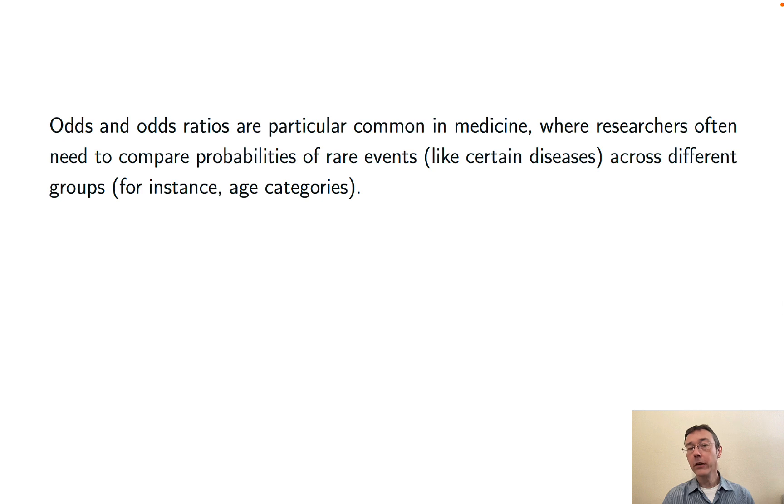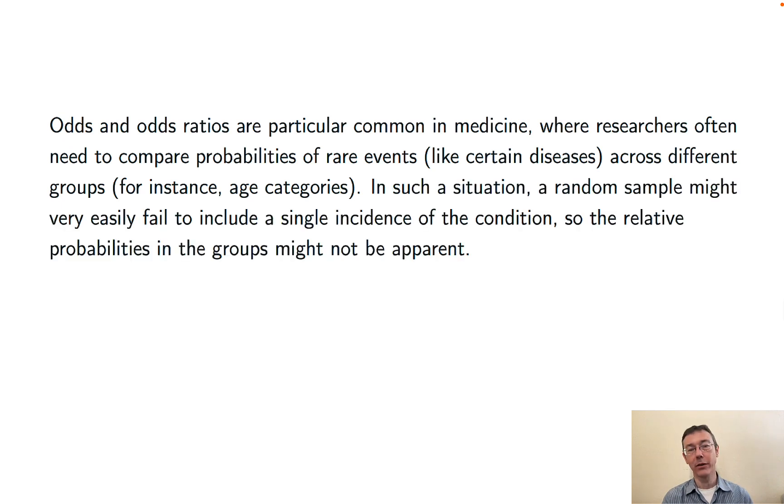Odds ratios are particularly common in medicine, where researchers often need to compare probabilities of rare events like certain diseases across different groups, like different age categories. And when you're in a situation looking at something rare, like a rare disease, a random sample from your population very well could fail to include even a single occurrence of the condition.